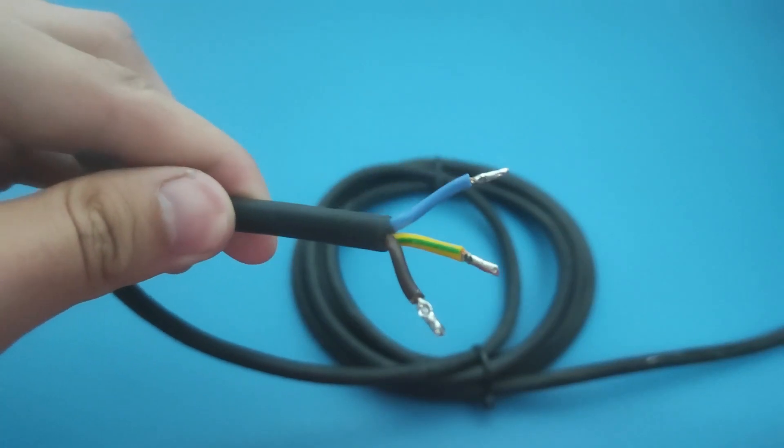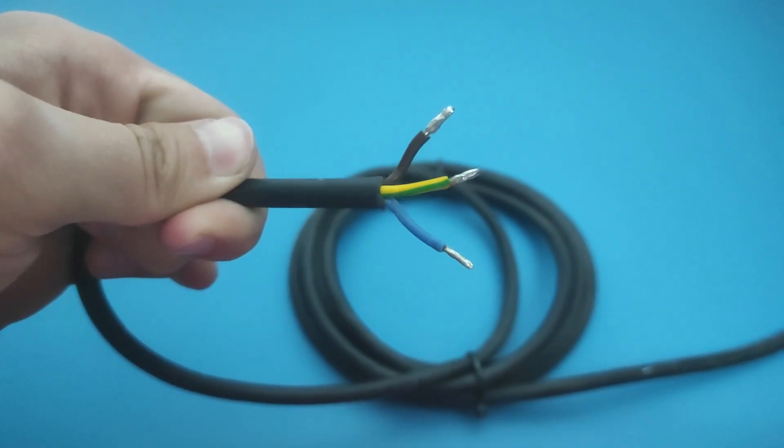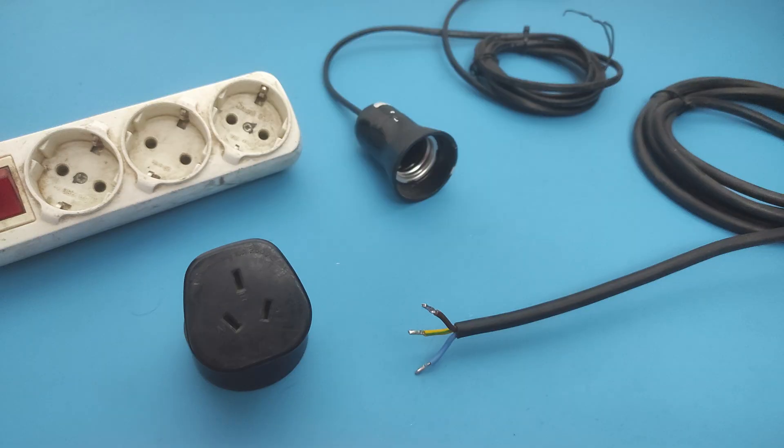I will also explain how you can find hot, neutral, and ground wire in the outlet and light socket.